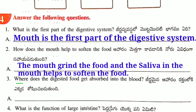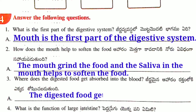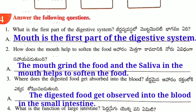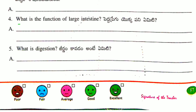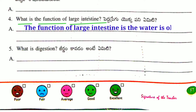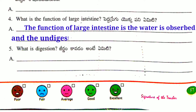Third question: Where does the digested food get absorbed into the blood? Fourth question: What is the function of the large intestine? Answer: The function of the large intestine is that water is absorbed and the undigested matter is sent out of the body.